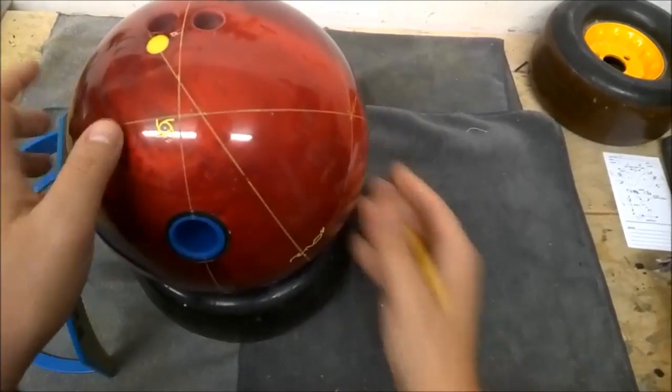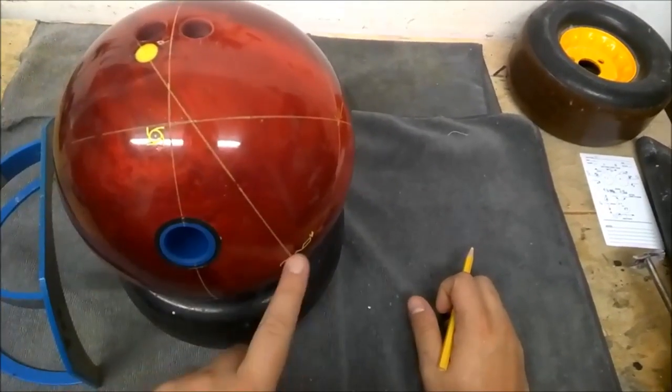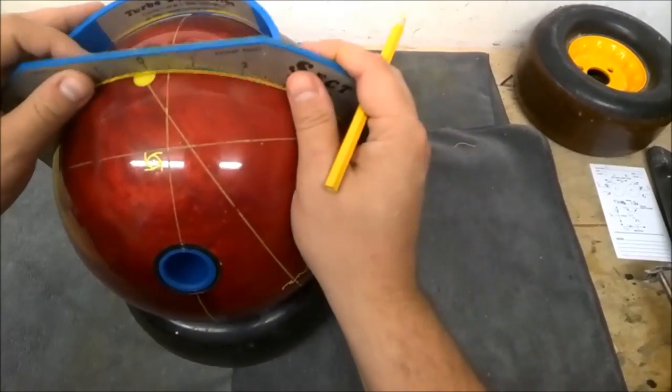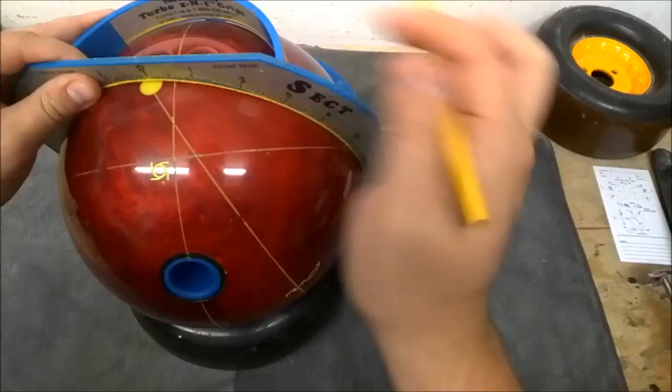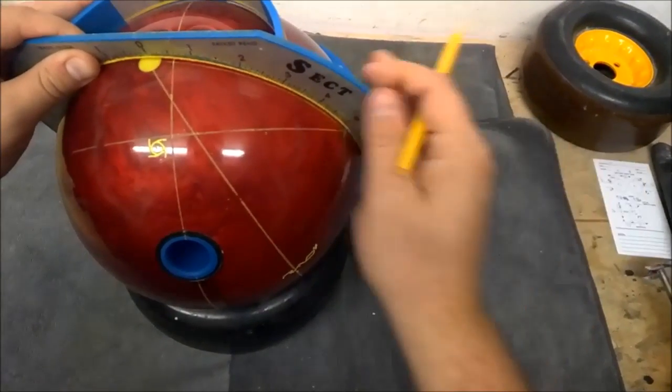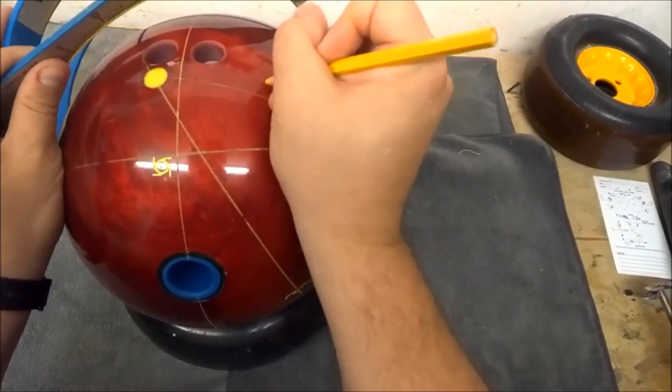Then the next thing you want to do is draw a line from the pin through the mass bias. Then, take your ProSect and draw a line from the pin to the PAP. We're going to measure that distance and on this ball it's five and a quarter.